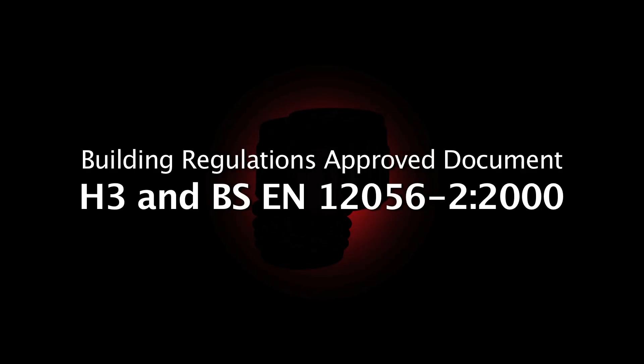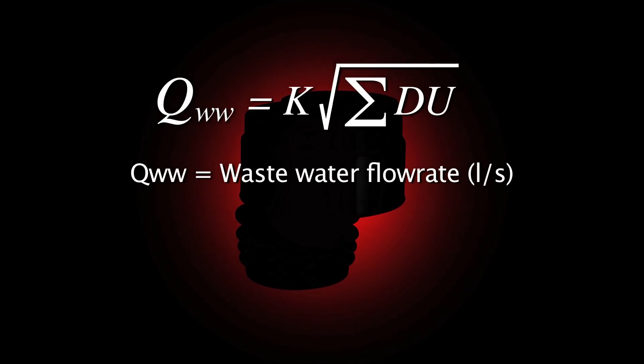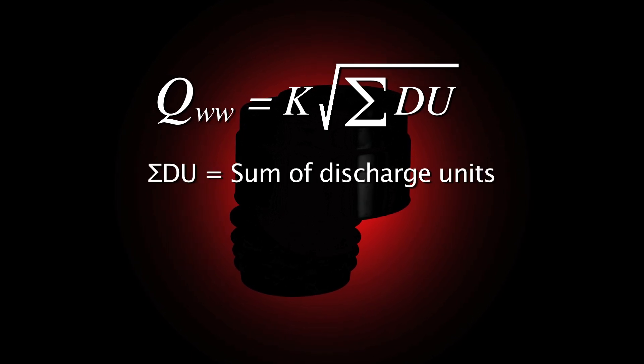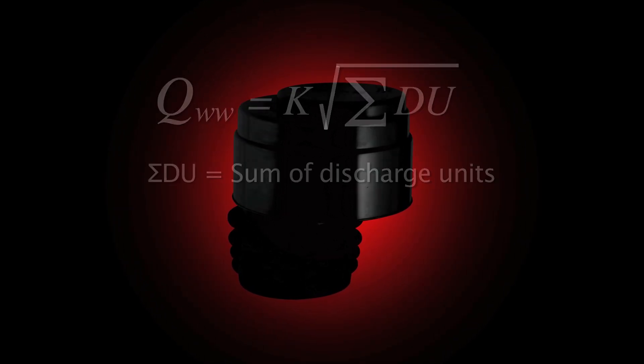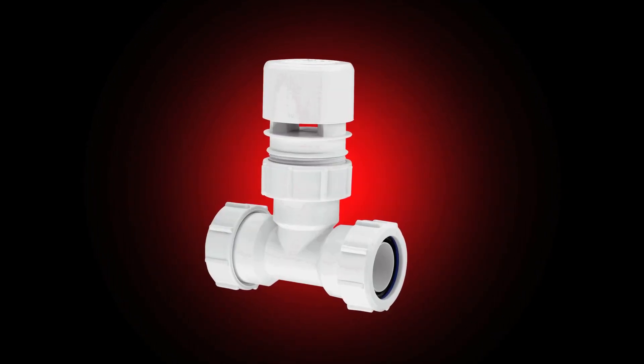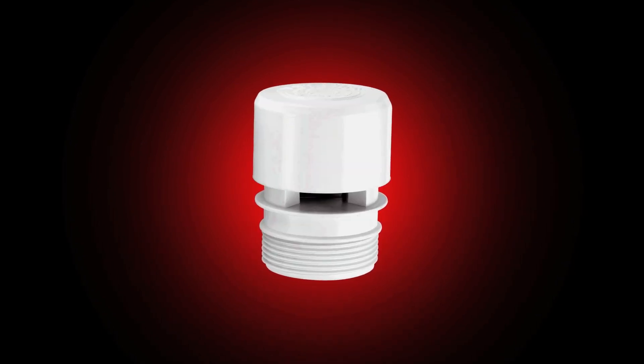The use of AAVs is approved under building regulations approved document H3 and BS EN 12056, though only AAVs manufactured to BS EN 12380 are suitable for use in sanitary pipework systems. The air flow rate of any AAV needs to be taken into consideration when the system is designed or modified. It is important when dealing with multi-storey buildings that AAVs are sized correctly and in accordance with BS EN 12056, which states that the valve has to be eight times the peak airflow rate of the soil stack. Where an AAV-equipped drain serves more than four storeys, there are specific rules about how the drain should be vented.